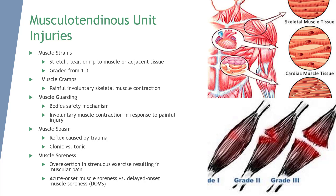Muscle spasms are a reflex reaction caused by trauma. There are two types: clonic and tonic. A clonic contraction occurs as an alternating involuntary muscular contraction and relaxation in quick succession. A tonic contraction is a rigid contraction that lasts a period of time. These types of muscle spasms can lead to muscle or tendon injuries.